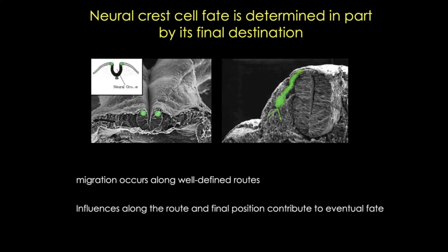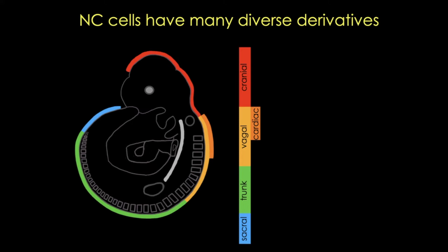As these cells travel, they lose their multipotency and become more lineage-restricted. Neural crest cells have a diverse set of derivatives, and what cells and tissues form depends on what part of the neural tube the crest cells came from. This cartoon shows the major divisions of the crest cell populations: the cranial, the vagal, the trunk, and the sacral populations.